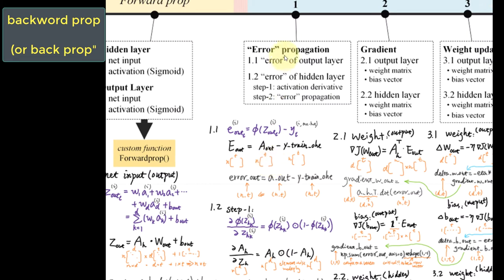I have zoomed in to the first step. The first step involves error propagation. The error propagation of the output layer is fairly simple, but the error propagation of the hidden layer is a little more complicated. It involves two steps. The reason we do it two steps is to avoid the code being too long and too complex, so that the process is easier to understand.